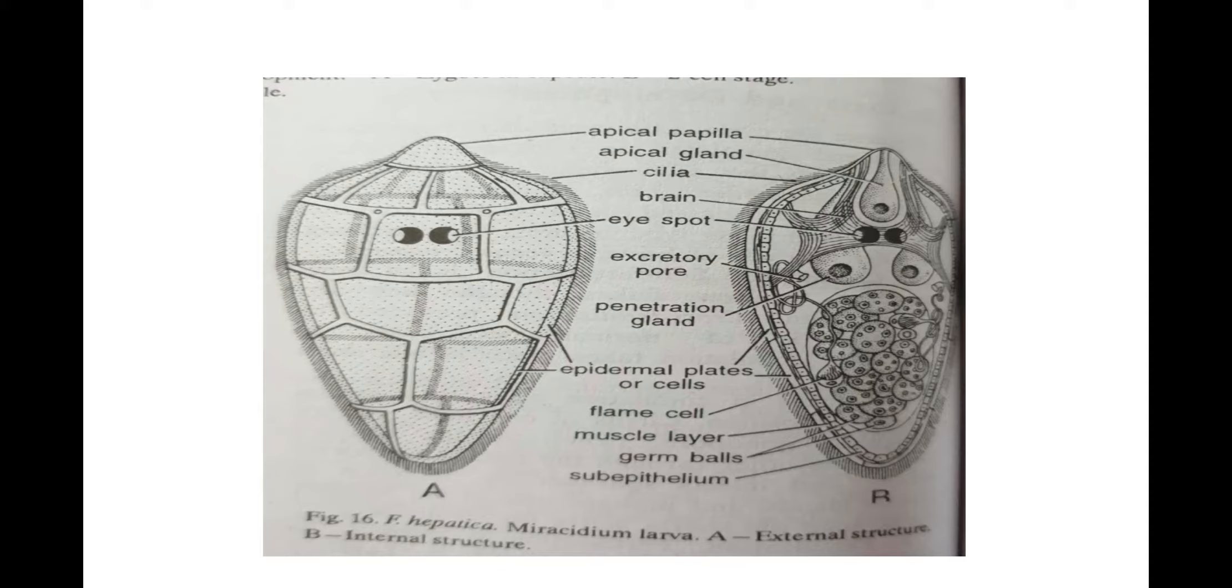It soon makes its way into the digestive gland of snail, where it undergoes various changes and in about 14 days develops into the second larval stage, the sporocyst larva.